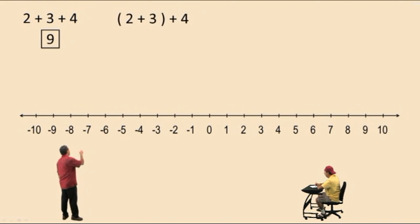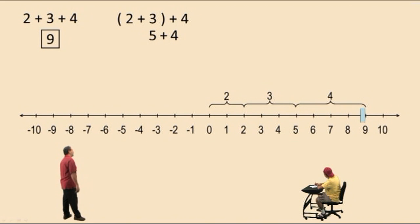Look at this problem. We have parentheses around the two plus three. That means we're going to add the two plus three first, and then add the four. So let's add the two and the three, which gives us five. So let's write down five, bring down our work, and let's add four more. And of course, we get nine.